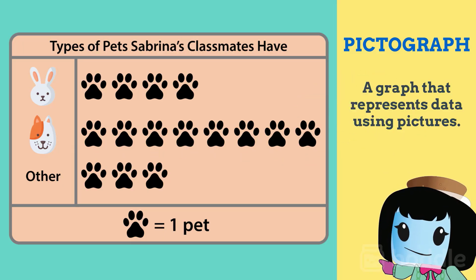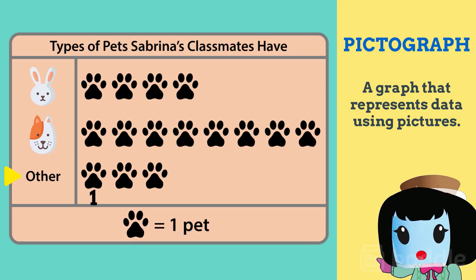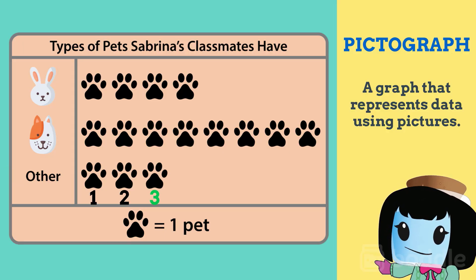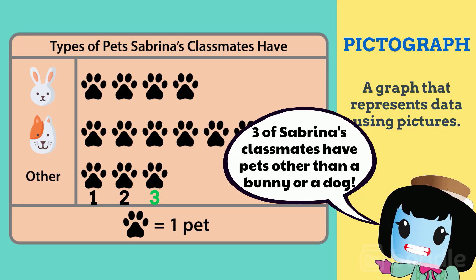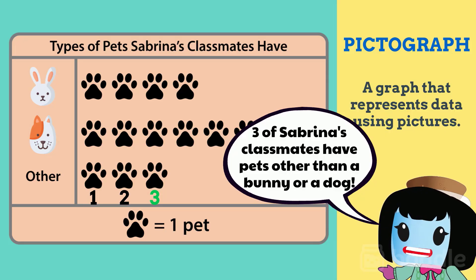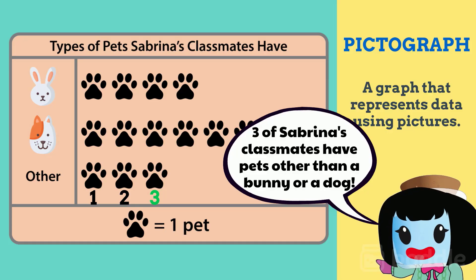Finally, on the part of the graph that represents other, there are three paw prints. So that means that three of her classmates have pets that are something other than a bunny or a dog.